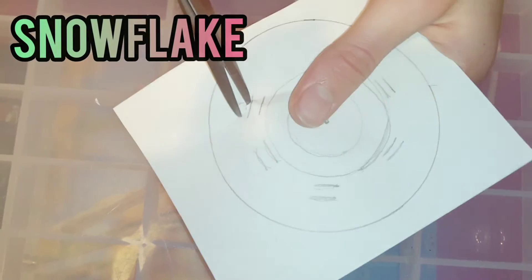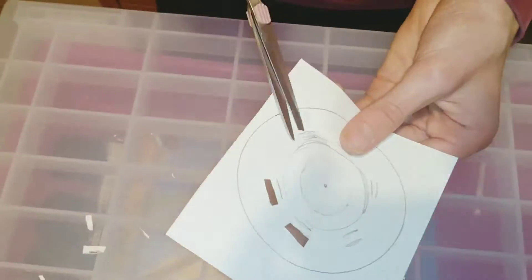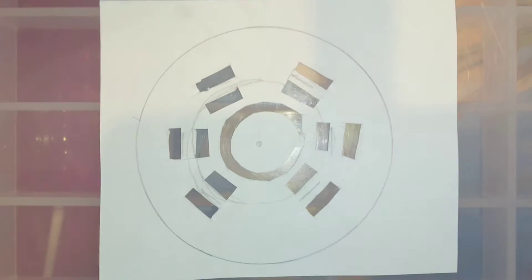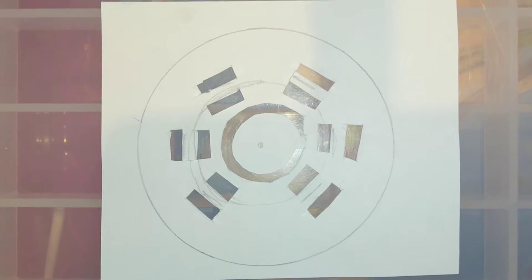The next one is the snowflake. This one looks weird to start with but I actually think it's the most effective out of all of them. I've cut out the outside bits and the inner circle.